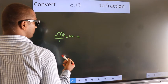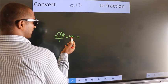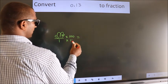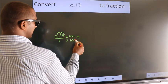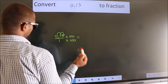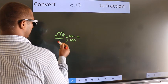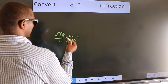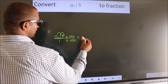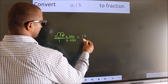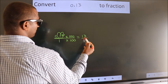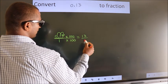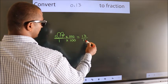Now, whatever you are multiplying in the numerator, in the denominator also you should multiply by the same. Now, 0.13 into 100, we get 13. In the denominator, 1 into 100, we get 100.